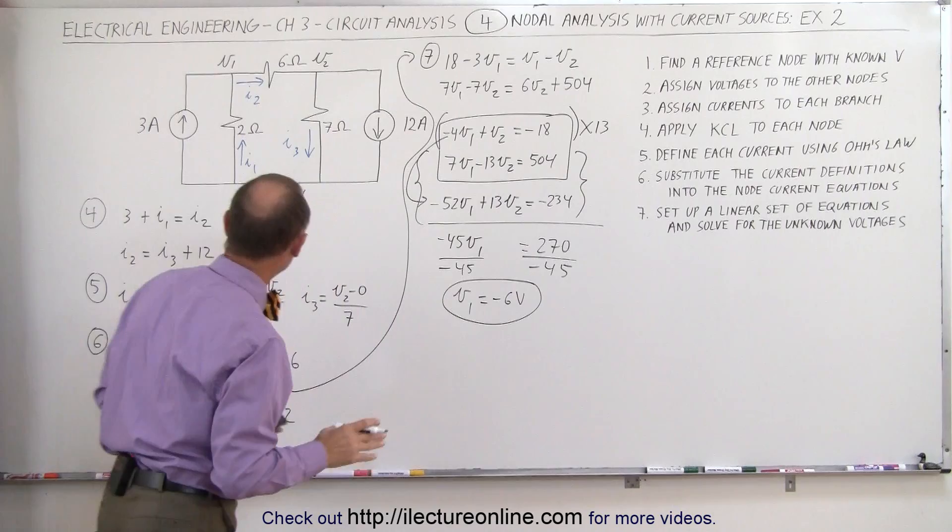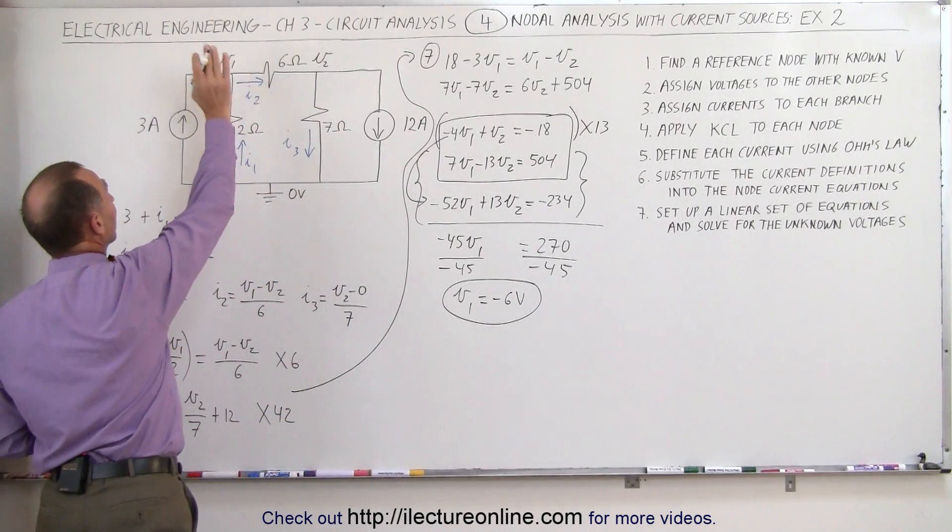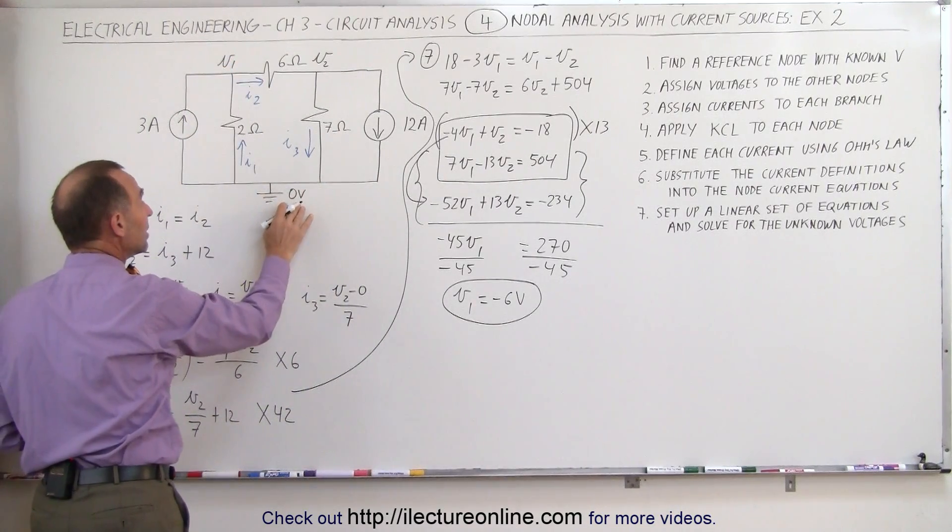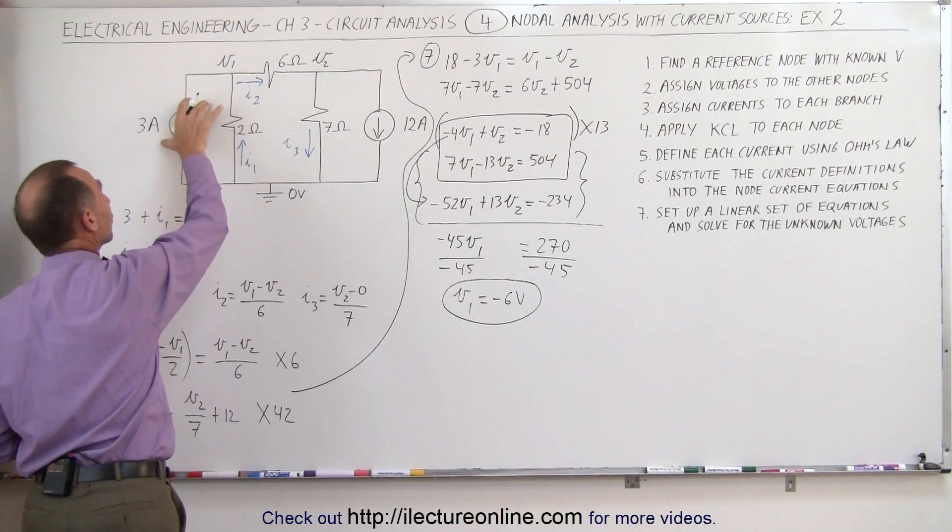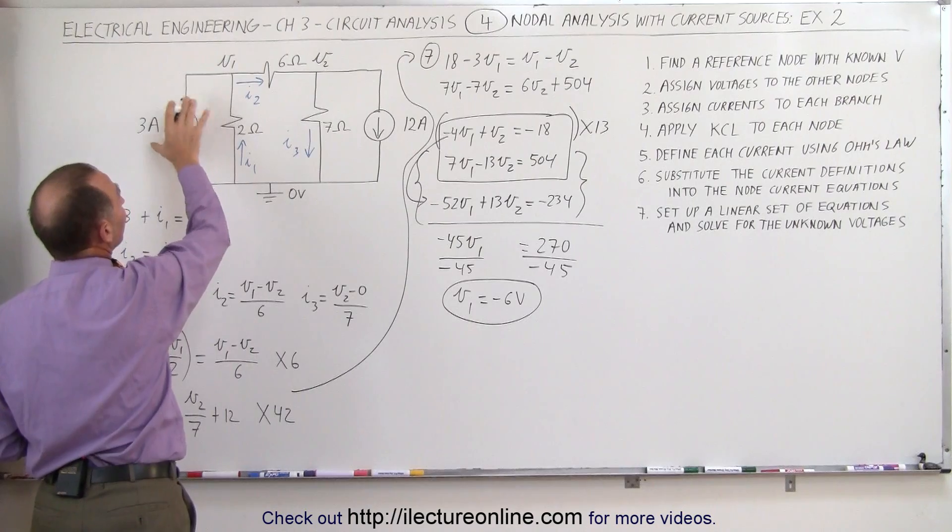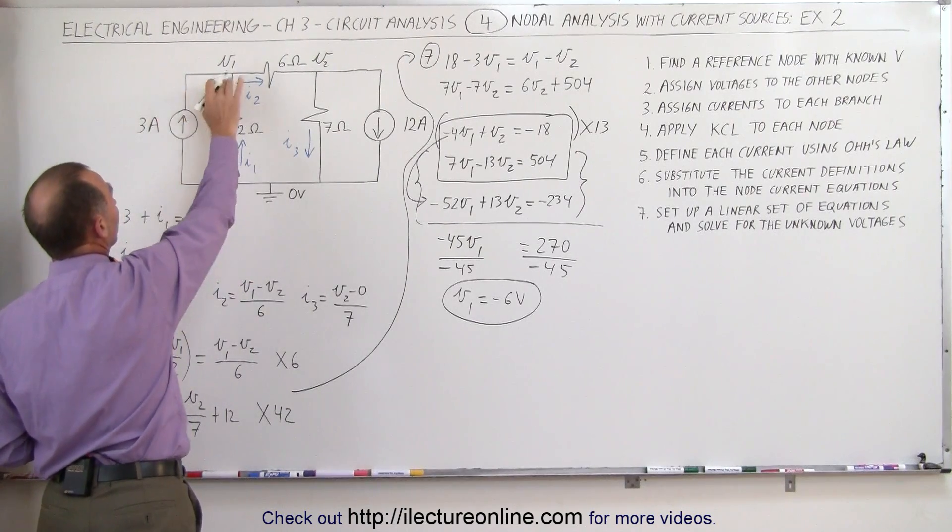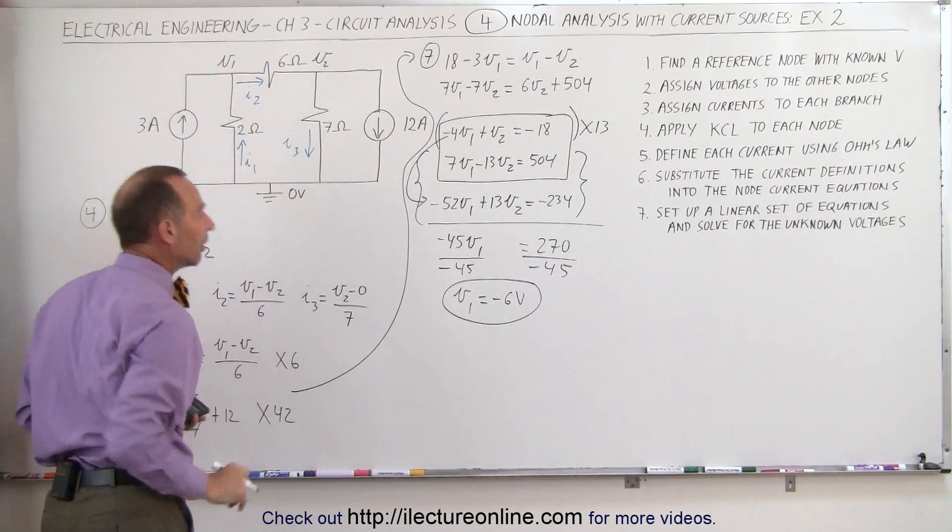And that's what we're suspecting. We're suspecting V1 to be at a lower potential than the ground right here. Otherwise, we could not have current flowing this direction. The current source right here is driving the current in such a way that this had to be a lower potential than this.